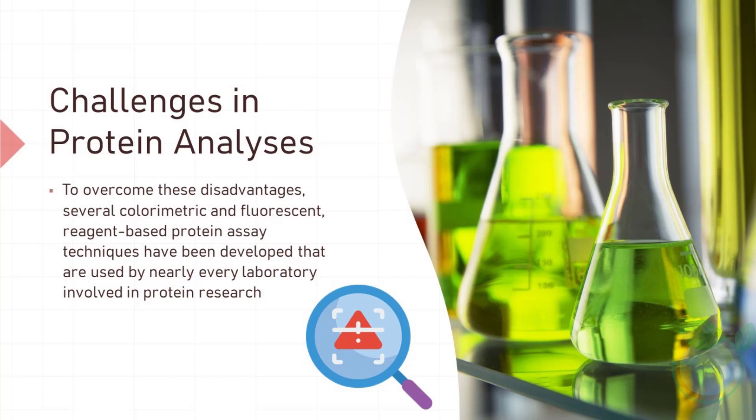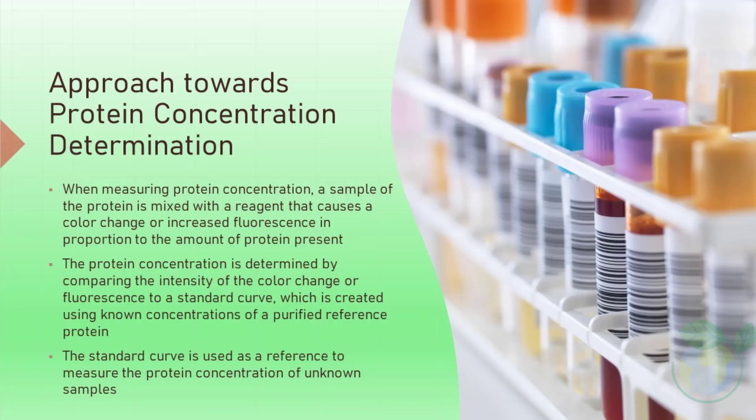Challenges in Protein Analyses. Thus far, we can see that the analyses of proteins can appear quite complicated. To overcome these disadvantages, several colorimetric and fluorescent reagent-based protein assay techniques have been developed that are used by nearly every laboratory involved in protein research. When measuring protein concentration, a sample of the protein is mixed with a reagent that causes a color change or increased fluorescence in proportion to the amount of protein present. The protein concentration is determined by comparing the intensity of the color change or fluorescence to a standard curve, which is created using known concentrations of a purified reference protein. The standard curve is used as a reference to measure the protein concentration of unknown samples.